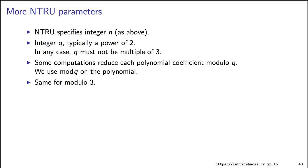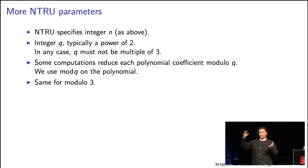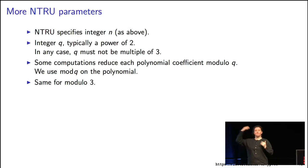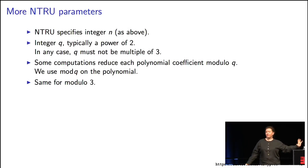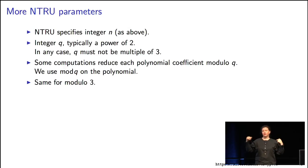Back to the NTRU description. We need another system parameter q, which doesn't have to be prime — it's typically a power of two — and it bounds the coefficients, reducing them mod q when they reach q. There's one condition that q is not three, since we'll also be reducing mod three. So we'll have two reductions: modulo x to the N minus 1 to reduce the degree, and modulo q (or mod 3) to reduce the coefficients. Each of the N coefficients gets one of these reductions applied.